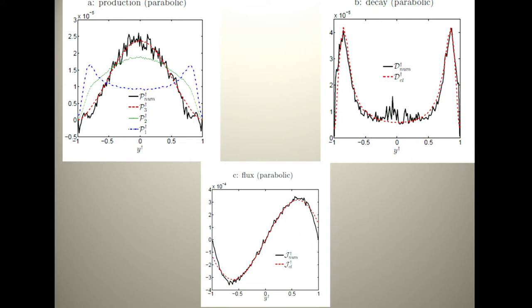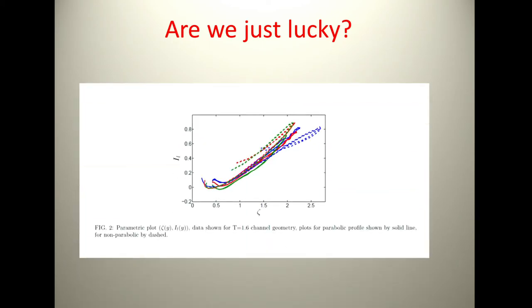The decay term agrees very well with Vinen's approximation. We have here the new term that nobody looked at, which is the flux of the vortex lines, and it fits the data very well. But maybe we're just lucky. When you look at various parabolic profiles and you look at this object that they call the anisotropy parameter as a function of zeta, it's always almost a parabola. This works pretty well.